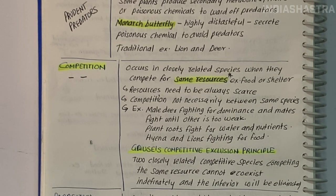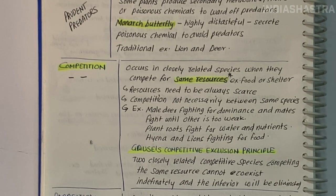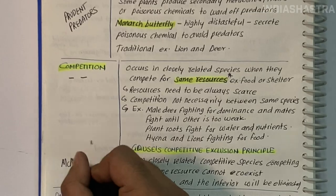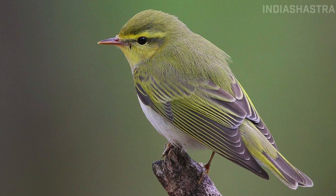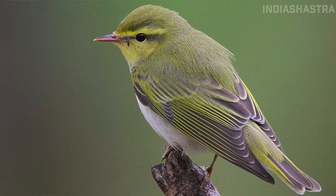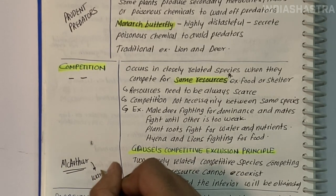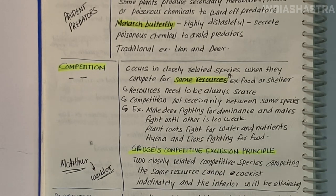Gauss's Competitive Exclusion Principle states that two closely related species competing for the same resource cannot co-exist indefinitely — the competitively inferior one will be eliminated eventually. One mechanism to avoid this is resource partitioning: species avoid competition by choosing different times for feeding or different foraging patterns. MacArthur showed that five closely related species of warblers living on the same tree avoided competition through behavioral differences in foraging activities.